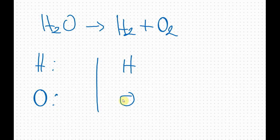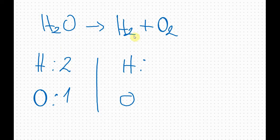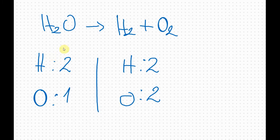If we count, we can see that on this side I have two hydrogens — I'll insert that value in the chart — and one oxygen. On the other side I have two hydrogens and two oxygens. So we can see the equation isn't balanced yet because we have different numbers of atoms for oxygen: one here and two there.